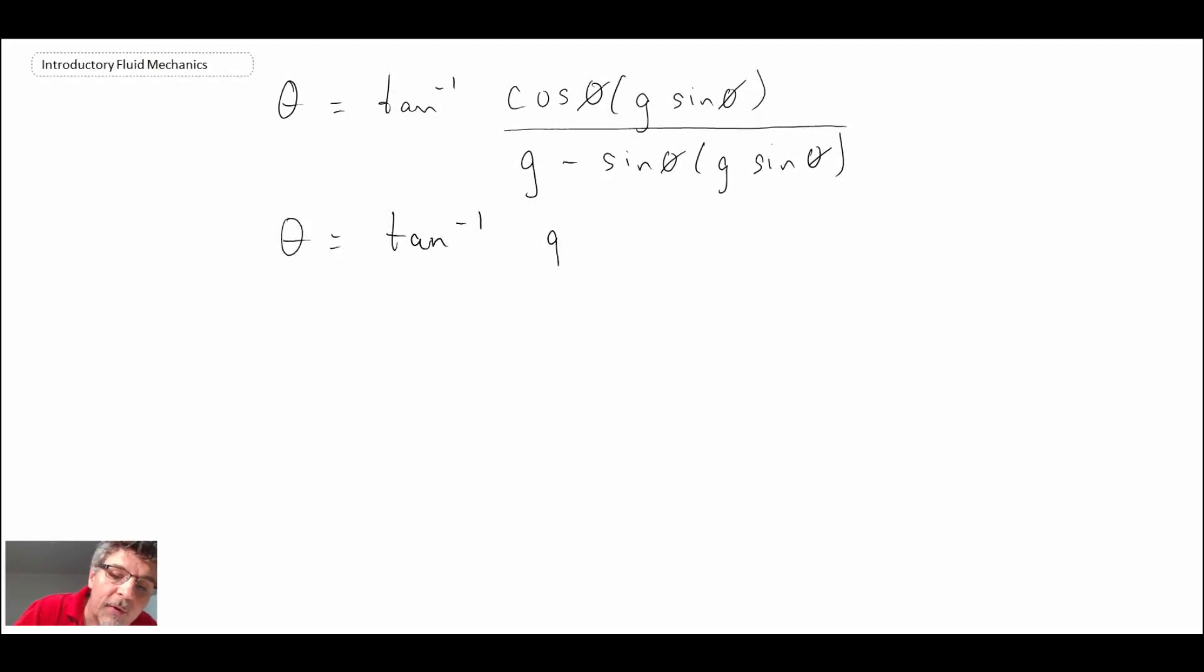We can pull the g out and then we have sine phi cos phi, and that is divided by, again I'll pull the g out, and then we have one minus sine squared phi. If you remember back to your math courses we had trig relationships, this is equal to cos squared phi, so I can rewrite it with that substitution.